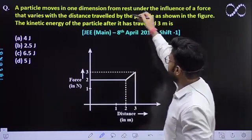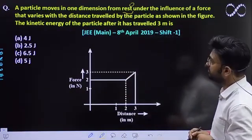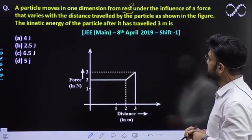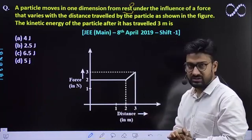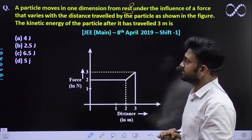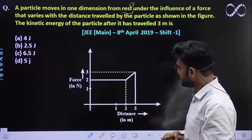From rest means initial velocity will be zero, under the influence of a force that varies with the distance travelled by the particle as shown in the figure. So the force and displacement graph is already given to you.